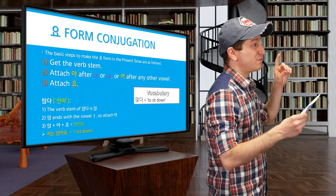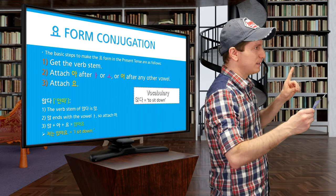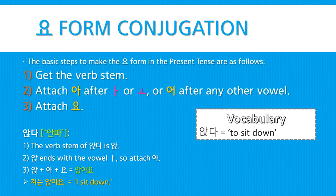So let's talk about how to make the 요 form. The basic steps are as follows. Step one: get the verb stem. Step two: if the verb stem ends in 아 or 오 as its vowel, attach the syllable 아; or if it ends with any other vowel, attach the syllable 어. And step three: attach 요 to the end. But these are just the basic rules and not everything will follow them.